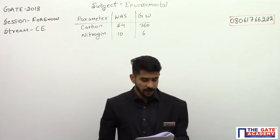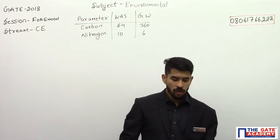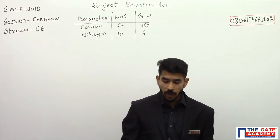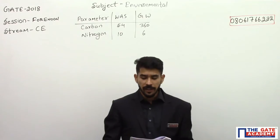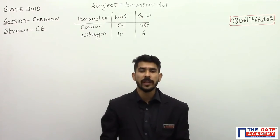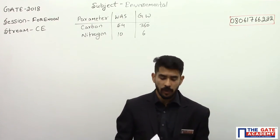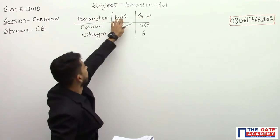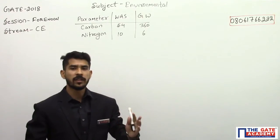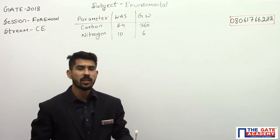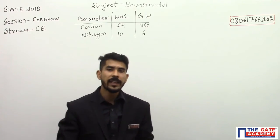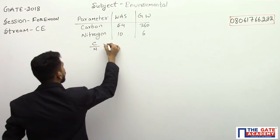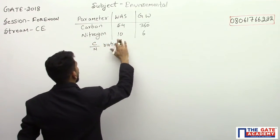The data shows the ratio of WAS to GW required to achieve a blended C by N ratio of 20 to 1 on dry basis. When you are mixing these two kinds of waste, the resultant C by N ratio of the mixture should equal 20 is to 1.